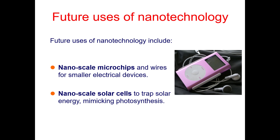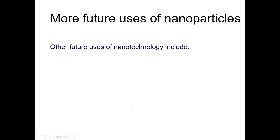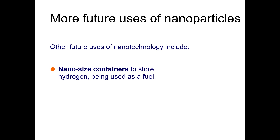As you can see in the figures, these are the main products of nanotechnology. We can have nano solar cells to harness solar energy. This is something we can do with nanoscience and nanotechnology. Another future use of nanotechnology includes nanoscale containers to store hydrogen being used as a fuel.